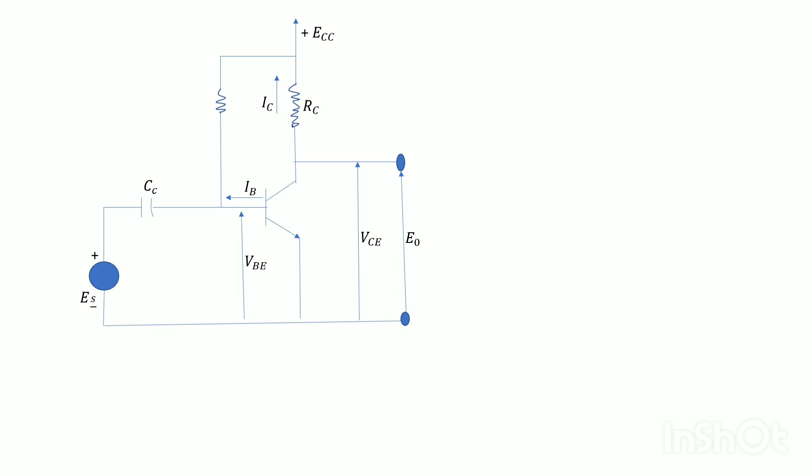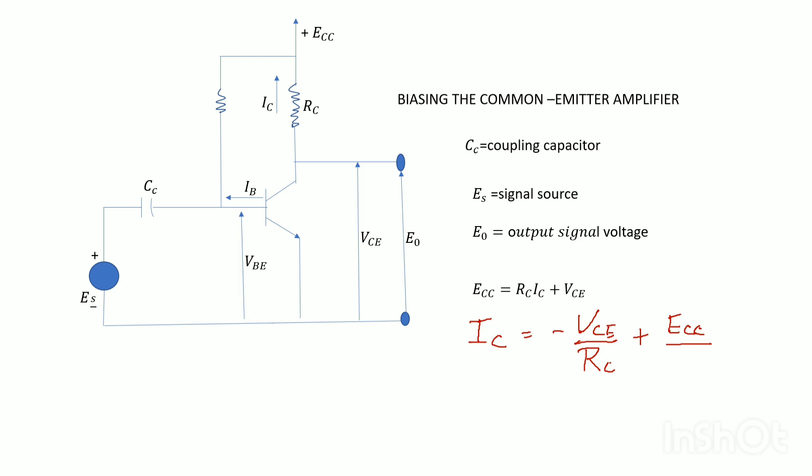Now we discuss biasing the common emitter amplifier. This is the basic class A common emitter amplifier biased from a single DC source Ecc. Es is signal source, E0 is output signal voltage, and Ecc is Rc times Ic plus Vce. Here you get the Q point, the quiescent operating point. IC can be written as IC equals Vce divided by Rc plus Ecc divided by Rc.